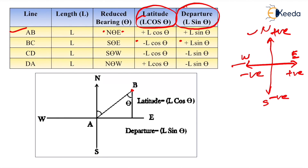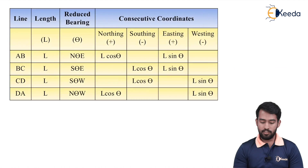For example, we have to find out the position of point B, expressed in terms of latitude and departure. The departure is L cos θ and the latitude is L sin θ. We will see a simple example.